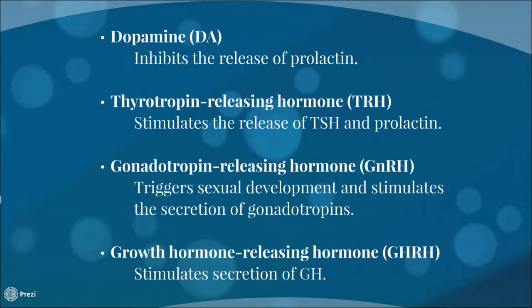Then we have thyrotropin-releasing hormone, which stimulates in the anterior lobe of the pituitary the release of thyroid stimulating hormone (TSH) and prolactin. Then we have gonadotropin-releasing hormone, which is a peptide hormone whose secretion at the onset of puberty triggers sexual development, and from then on it is essential for normal sexual physiology in both males and females. Its secretion occurs in periodic pulses, usually every one or two hours, and it stimulates the secretion of gonadotropins.